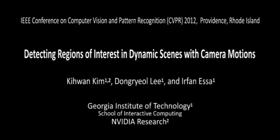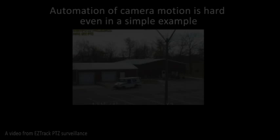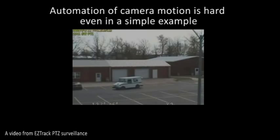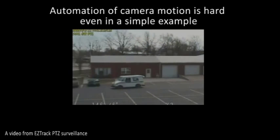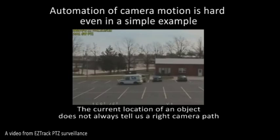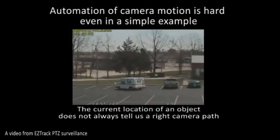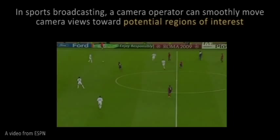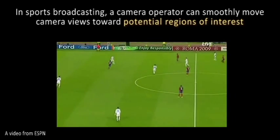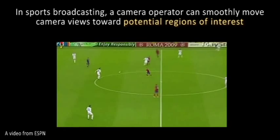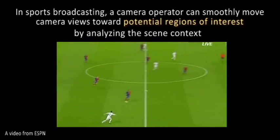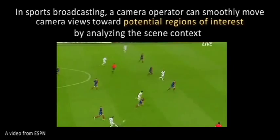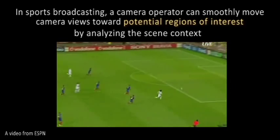In this paper, we propose a method to detect the regions of interest in moving camera views of dynamic scenes. Automatic adjustment of the camera view is a difficult problem even in simple examples. Approaches that consider only the present state of the scene are often late to capture important events as they unfold. In sports broadcasting, a professional operator can smoothly adjust the camera view to anticipate potential regions of interest based on the scene context. Such prediction is an important cue for creating automatic camera motions.